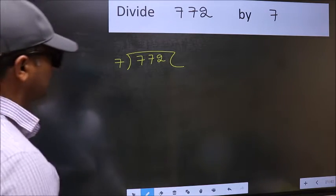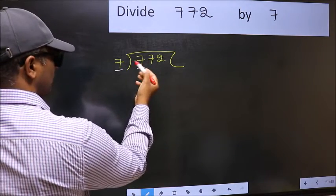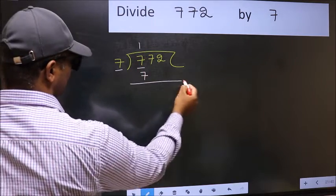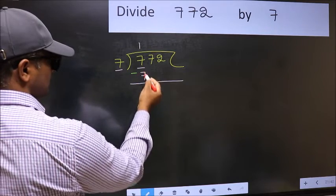Next. Here we have 7, and here also 7. When do we get 7 in 7 table? 7 once 7. Now you should subtract. 7 minus 7, 0.